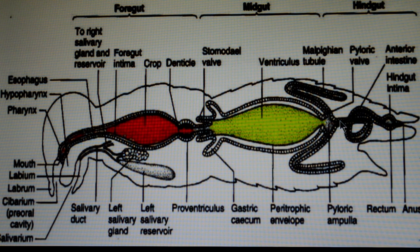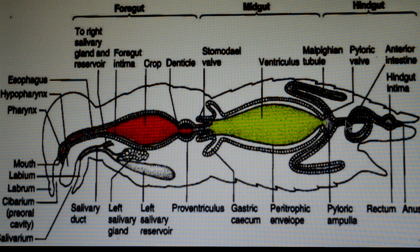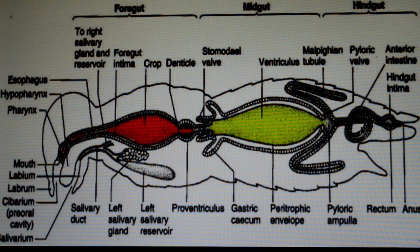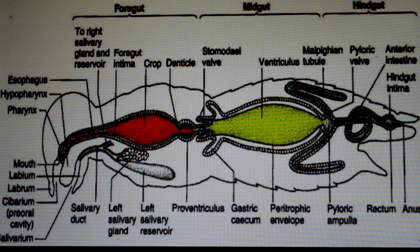The hindgut is differentiated into three parts: ileum, colon, and rectum. The ileum is the anterior part of the hindgut, which is pouch-like and harbors symbionts. The expansion of the ileum is called the paunch in termites, and in larval scarabids, it is called the fermentation chamber.